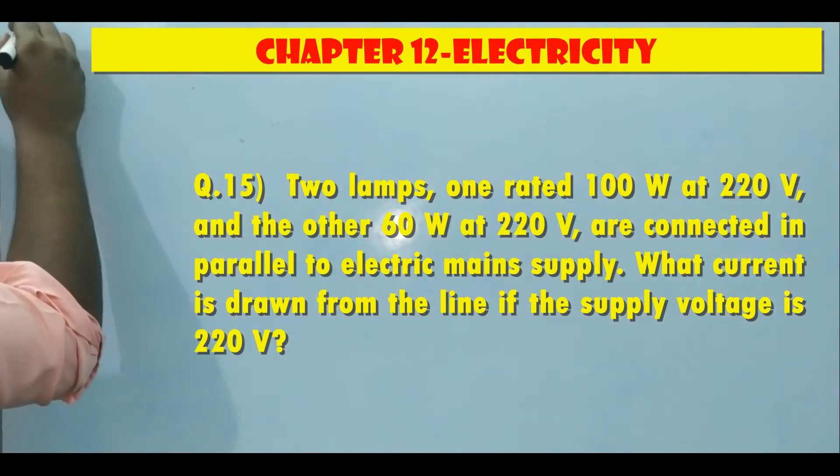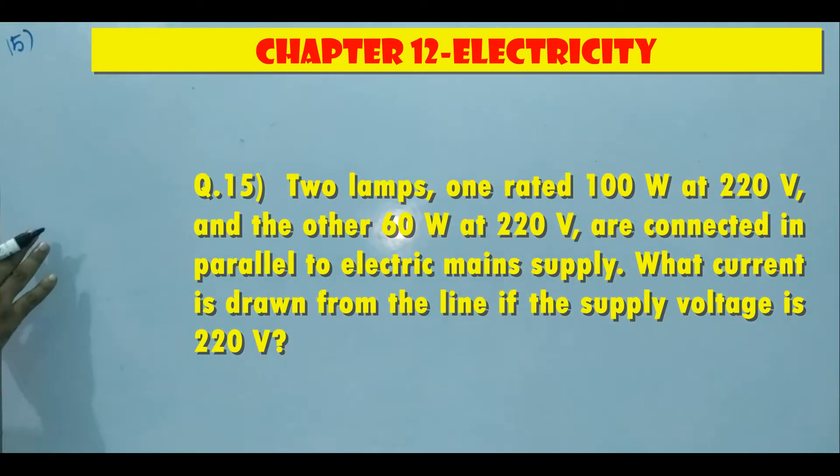Exercise 15. Two lamps, one rated 100 watt at 220 volt and the other rated 60 watt at 220 volt are connected in parallel to electric main supply. What current is drawn from the line if the supply voltage is 220 volt?